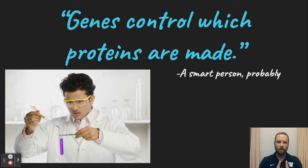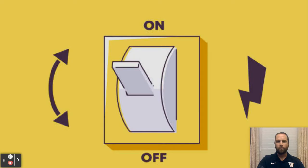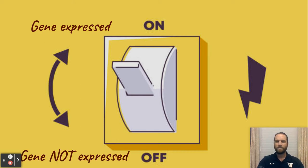Genes control which proteins are made. Now genes only make proteins if they are expressed. Think of it like a light switch. If the light switch is turned on in the DNA, the gene is expressed. If it's in the off position, the gene is not expressed and the protein does not get made.